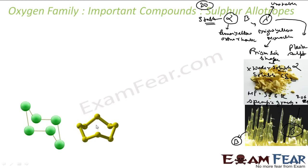Alpha sulfur has a puckered S8 structure — eight sulfur atoms arranged in a ring. This is a three-dimensional structure of S8 sulfur attached in a crown-shaped puckered ring.